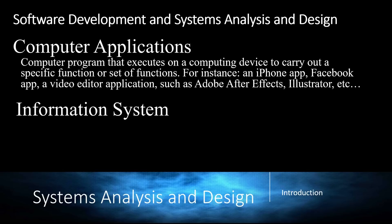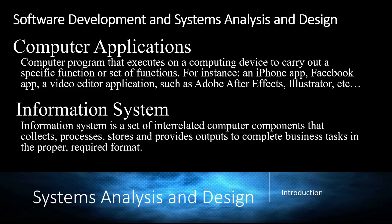What's an information system? An information system is a collection of those software applications that, when put together, return some solution for a task or a business problem. One definition is: an information system is a set of interrelated computer components that collects, processes, stores — usually in a database — and provides outputs to complete a business task in the proper required format. This depends on the project and the application the information system is designed for.